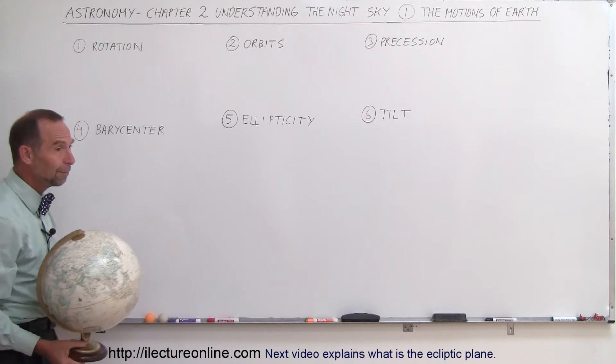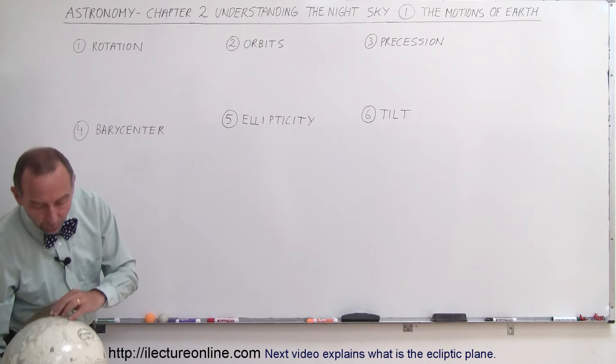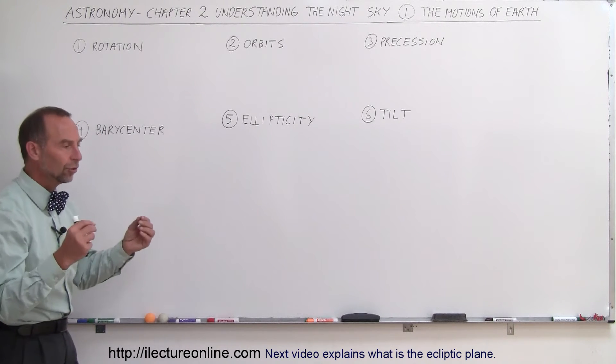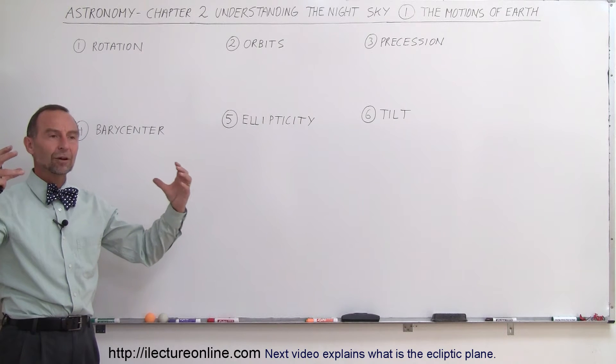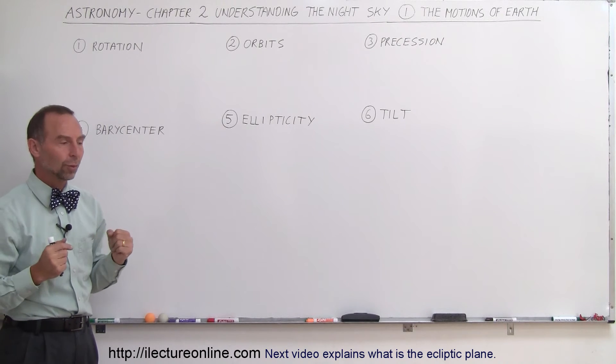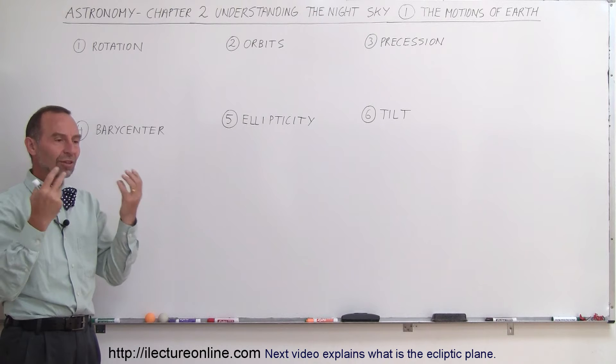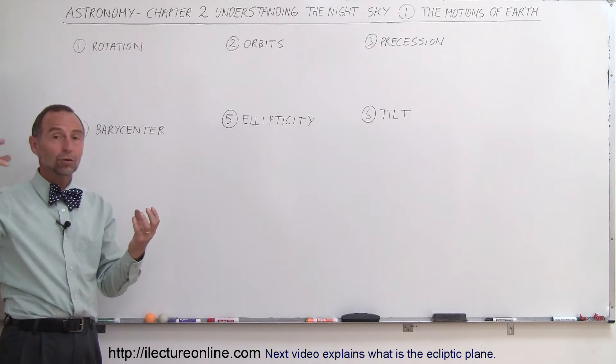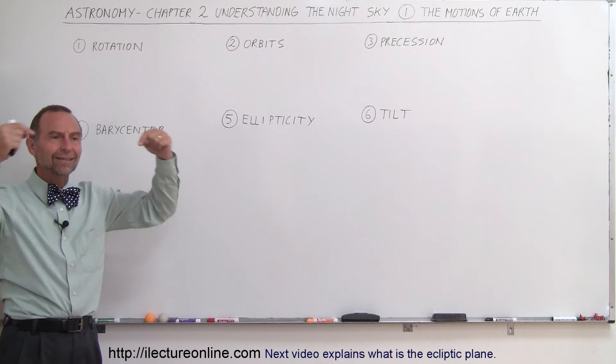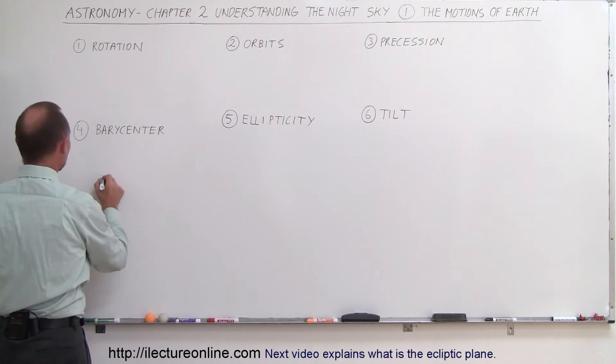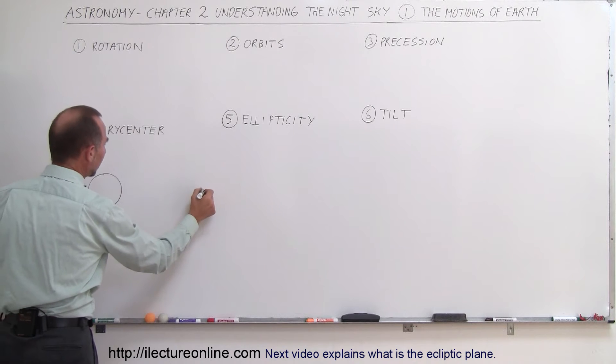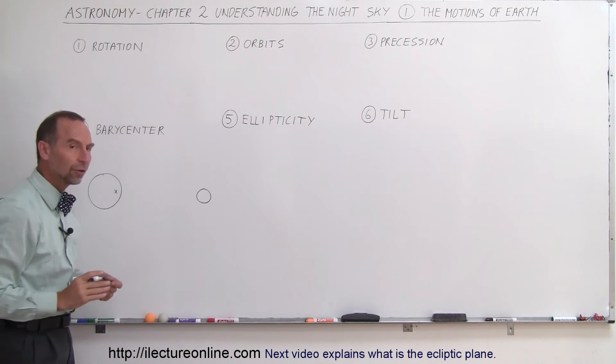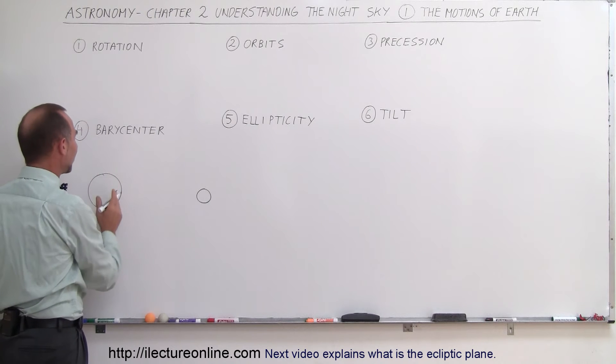Some other motions that are maybe a little bit more subtle, one of them is called motion around the barycenter. It turns out that the Earth and the Moon have a very strong gravitational attraction towards one another, and it's always perceived that the Moon revolves around the Earth, but it turns out that both the Moon and the Earth revolve around the center of mass. So, for example, if the Earth is over here, and the Moon is over there, right there, just slightly inside the surface of the Earth, is what we call the barycenter, the center of mass between the Moon and the Earth.